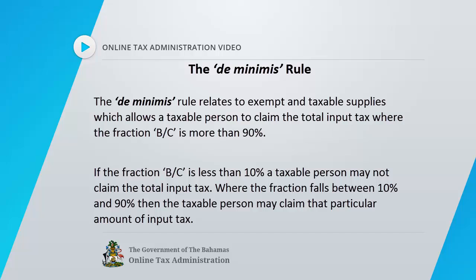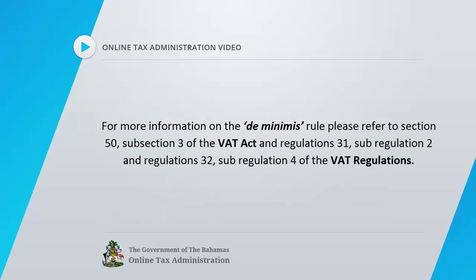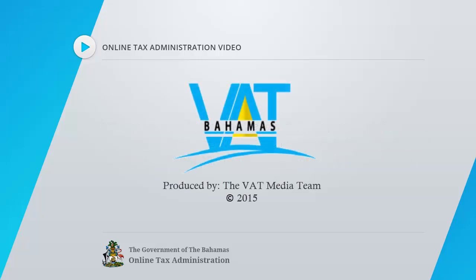If the fraction B divided by C is less than 10%, a taxable person may not claim the total input tax. Where the fraction falls between 10% and 90%, the taxable person may claim that particular amount of input tax. For more information on the de minimis rule, please refer to section 50, subsection 3 of the VAT Act, and regulations 31, sub-regulation 2, and regulations 32, sub-regulation 4 of the VAT regulations. That concludes this video.